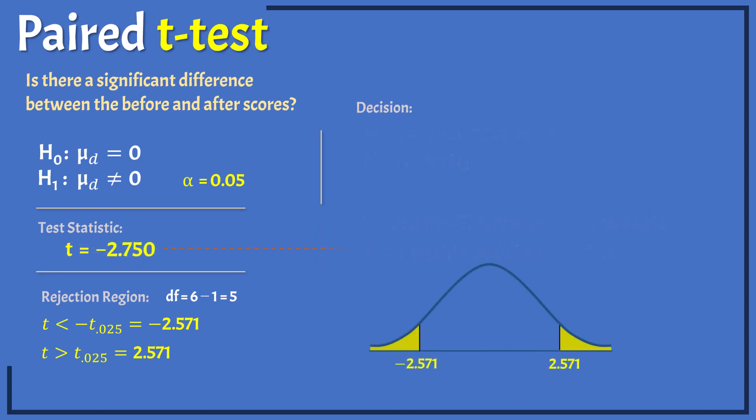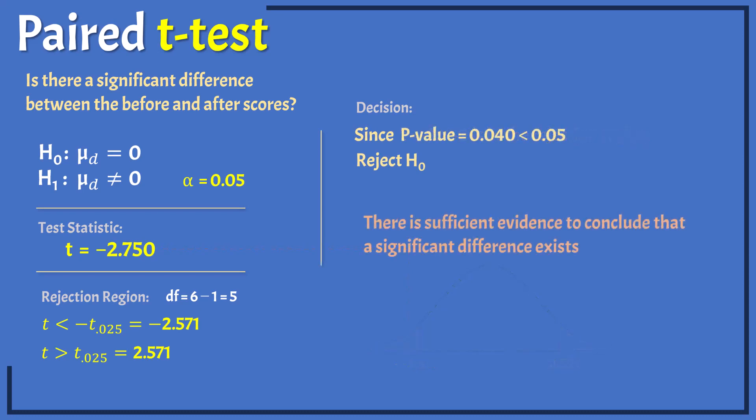Now suppose the observed t statistic is negative 2.750, which falls in the rejection region. We will reject the null hypothesis and conclude that a significant difference exists between the before and after scores.